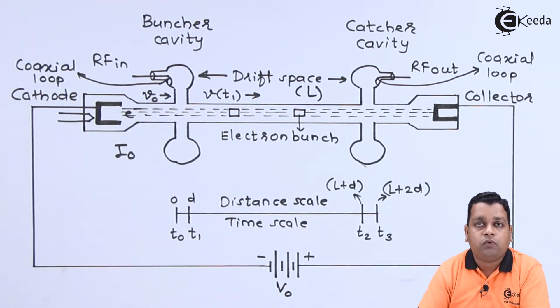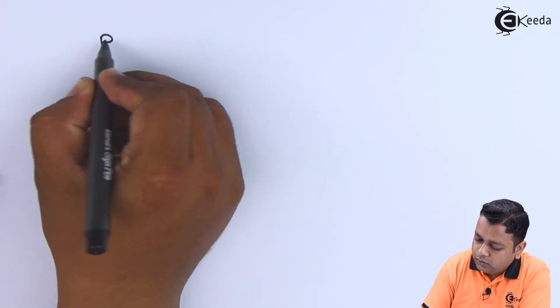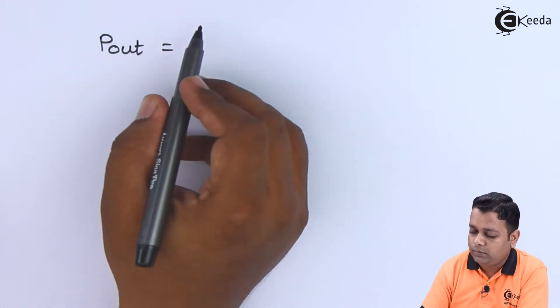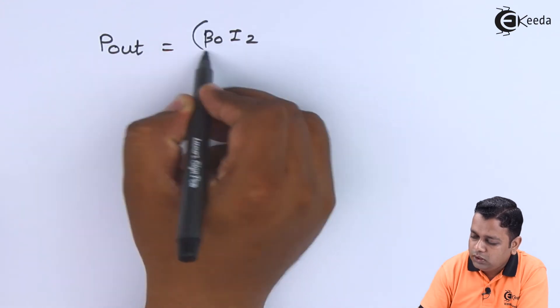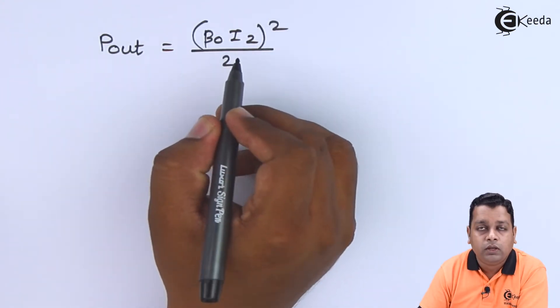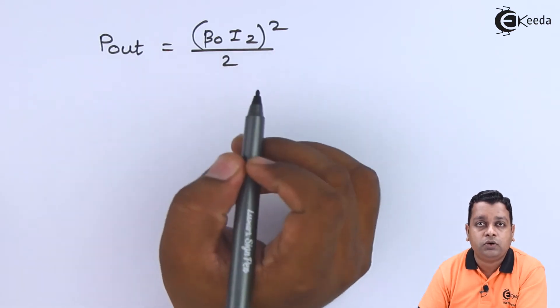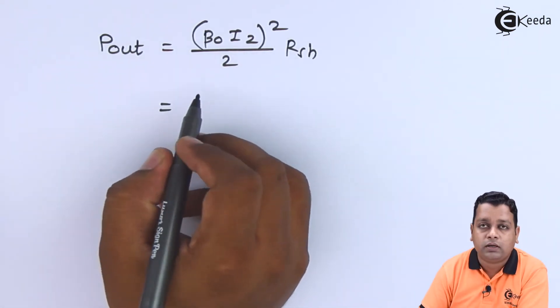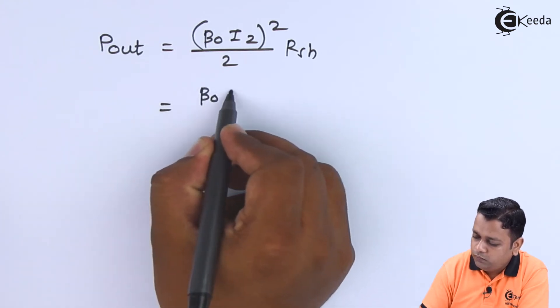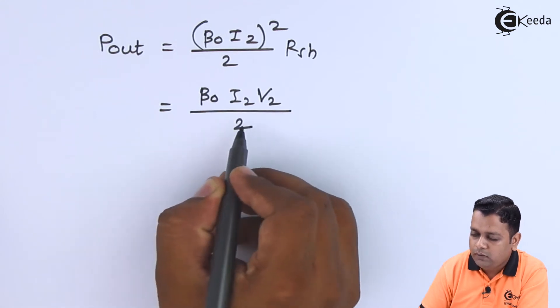Now we formulate the output power. The output power has a relation with the beam coupling coefficient of the output cavity and the current I2. It is given by: P_out = (beta_O * I2)^2 / 2 * R_SH. This can also be written simply as: P_out = beta_O * I2 * V2 / 2. This formula for output power is very important.